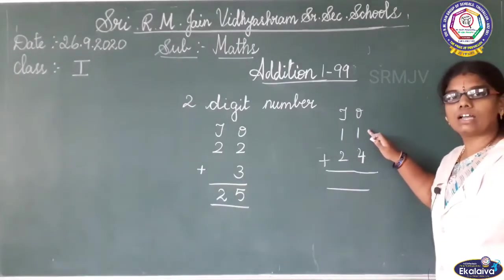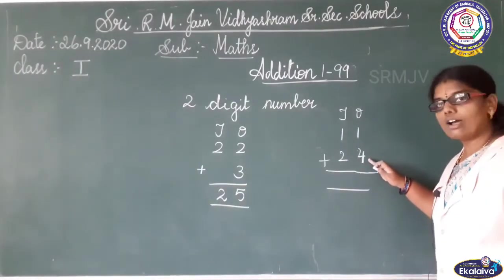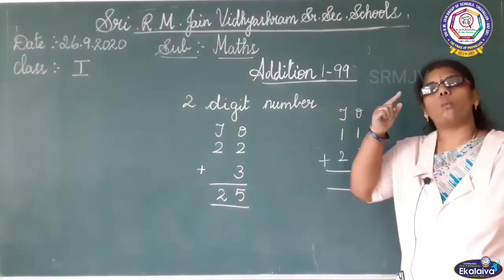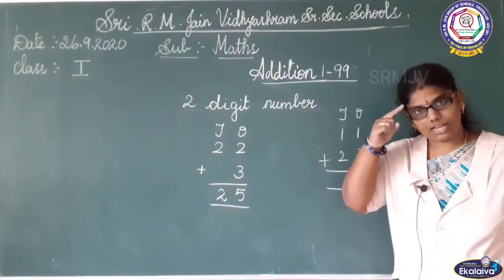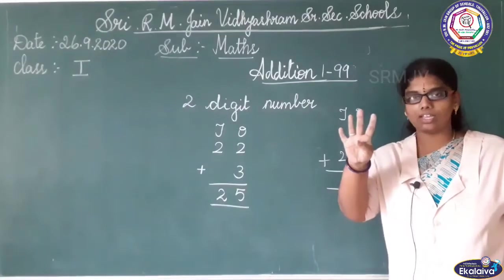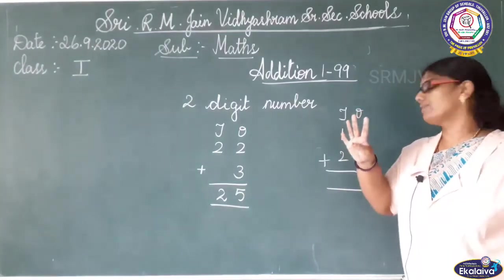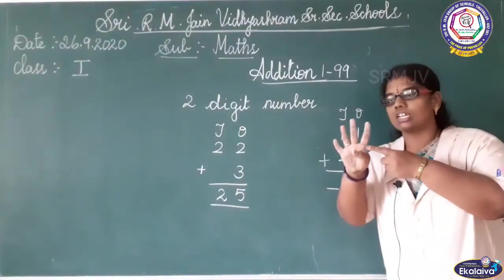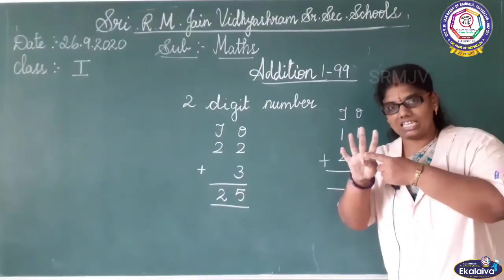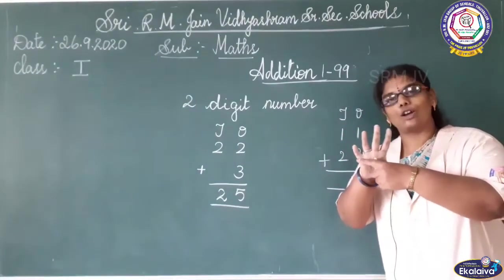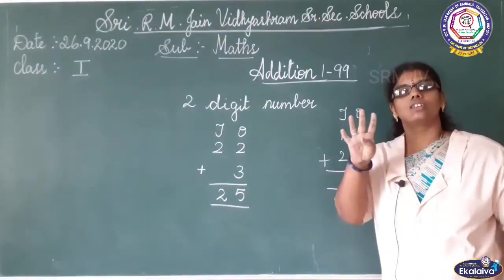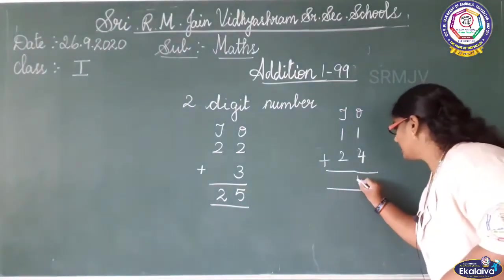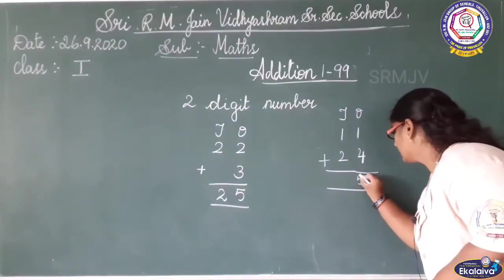What is the number here? One. Then four. You must keep one in the mind, four in the finger. After one: two, three, four, five. So what is the answer? Five. I am writing here five.